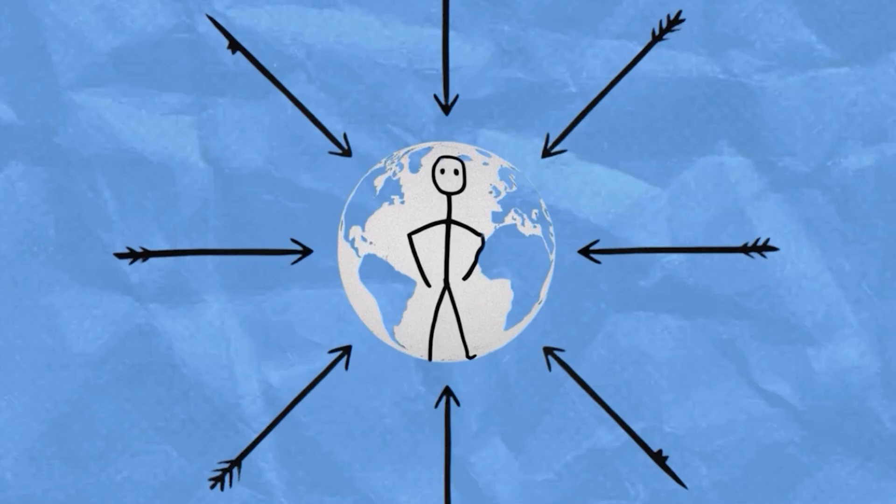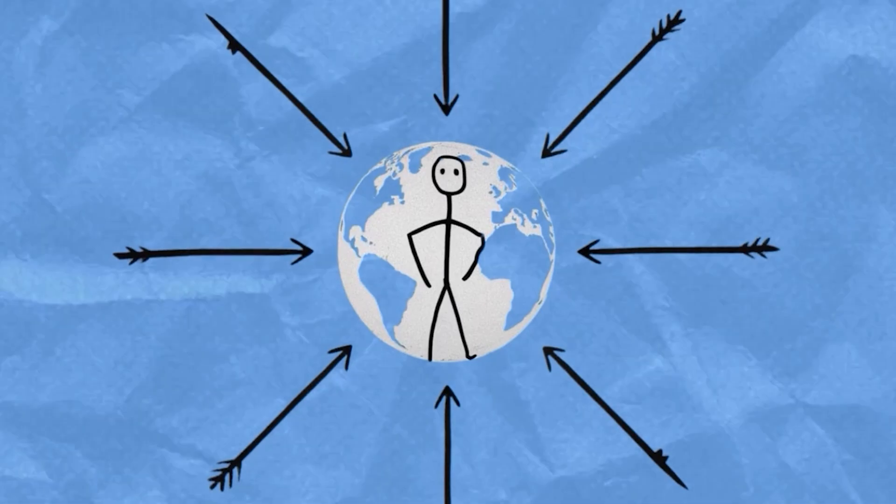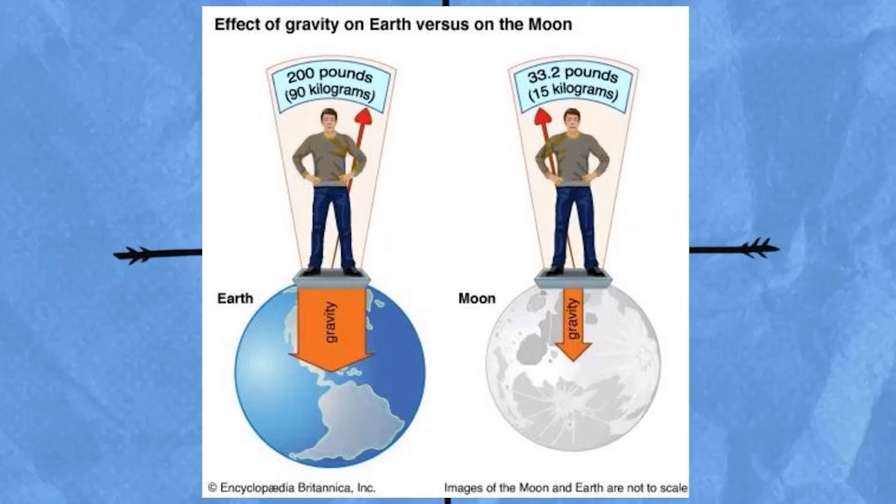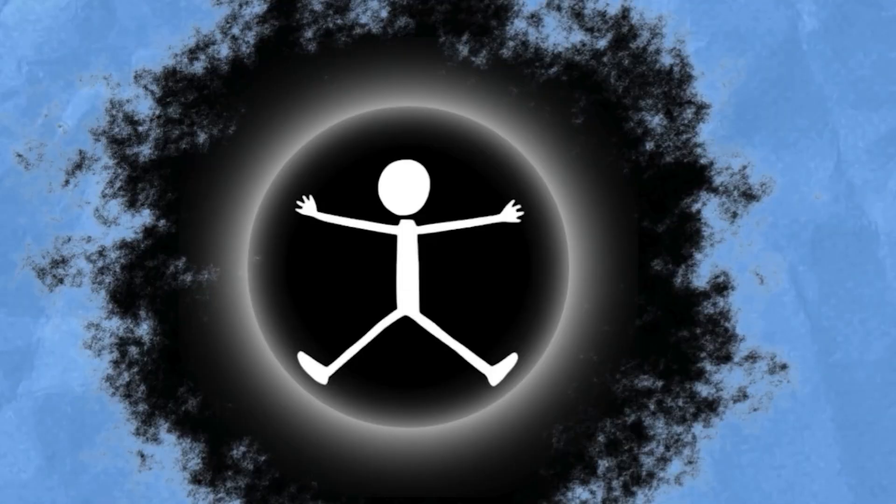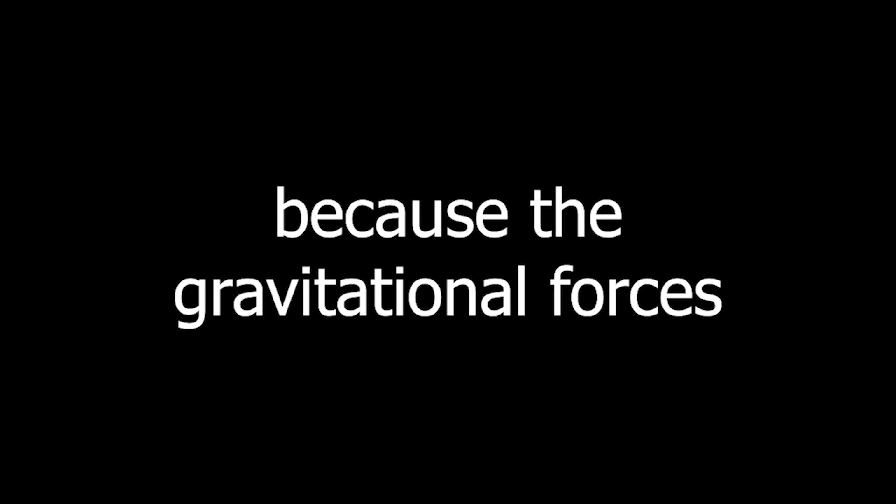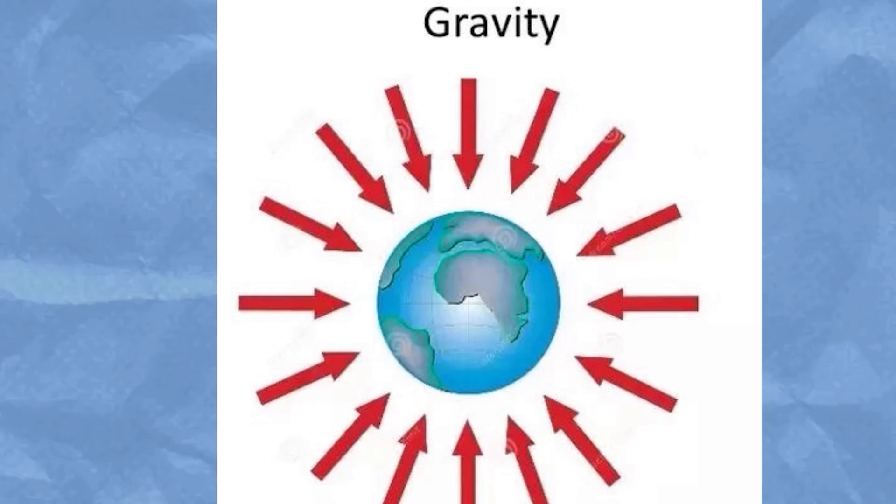But here's where it gets interesting. As you approach the centre of the Earth, gravity would start to decrease, because the mass of the Earth above you would begin to counteract the pull of gravity from below. At the exact centre of the Earth, you would be weightless, because the gravitational forces from all sides would cancel each other out.